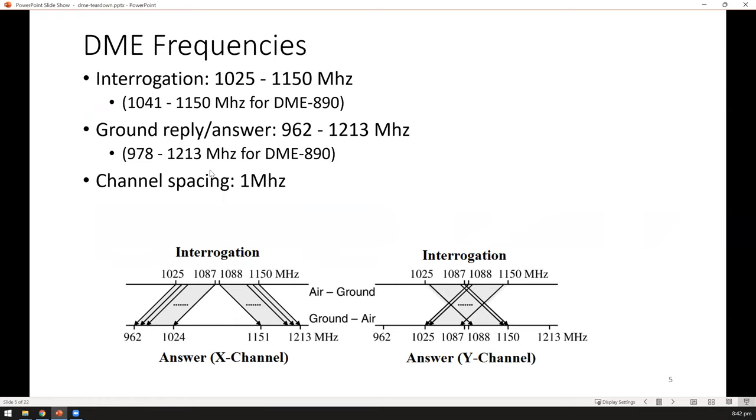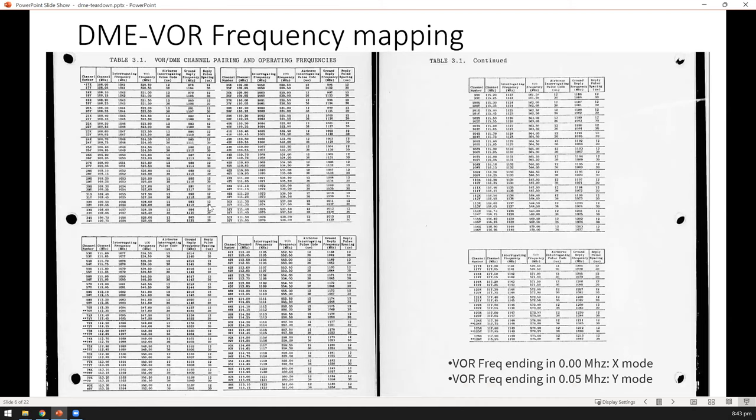For DME, they operate at these frequencies. They use two separate frequencies for interrogating the station as well as receiving a reply. The interrogation and answer frequency are exactly 63 MHz apart. So let's say if a particular station is listening to 1025 MHz, if it's using an X channel, it will reply back at 962. The DME uses two channels, X and Y. Basically, they operate at about 1000 plus MHz.